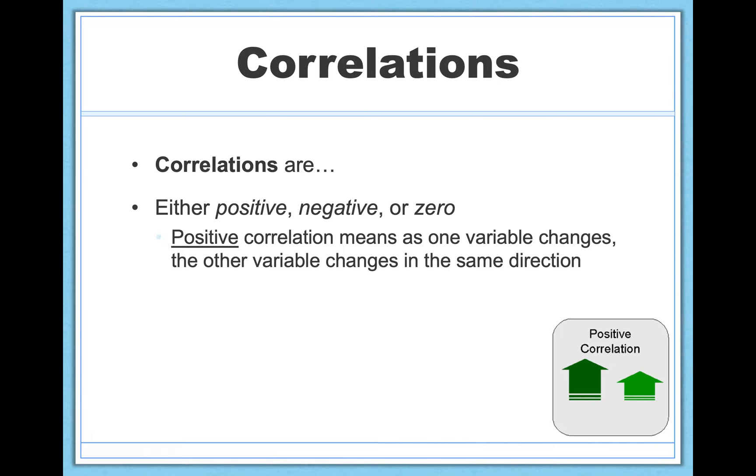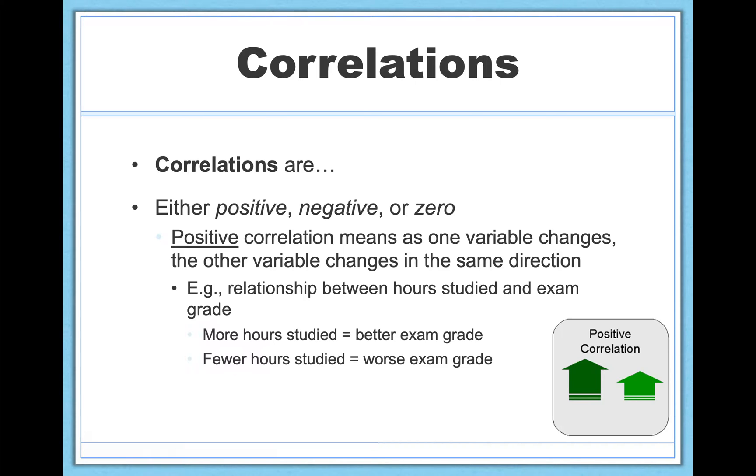So let's take each in turn. A positive correlation means that as one variable changes, the other variable changes in the same direction. So here's an example we just looked at a minute ago, the relationship between how much you study for an exam and your grade on that exam.